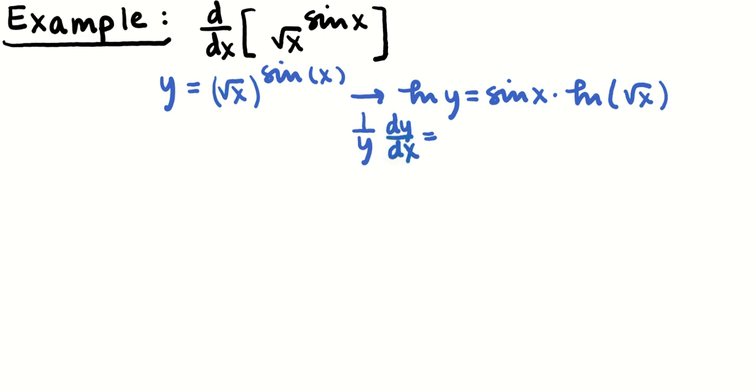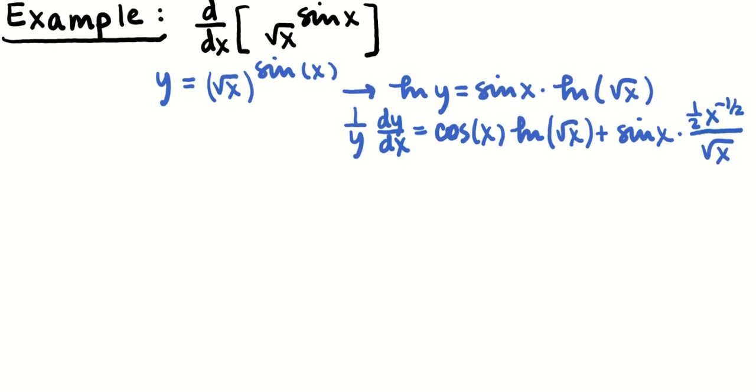So I'll take the derivative of both sides with respect to x, just like I did last time. 1/y dy/dx equals, take the derivative of sin(x), leave the other thing the same, then add in, leaving sin(x) the same, taking the derivative of log of √x. Well, that's going to be 1 over √x times the derivative of √x, which is 1/2 x^(-1/2). That's interesting.